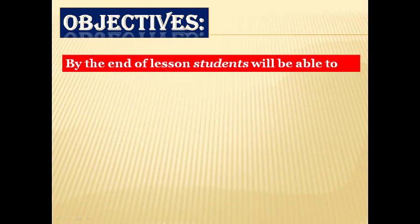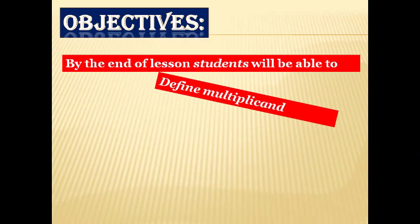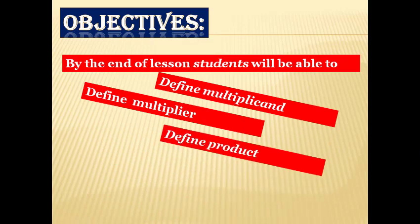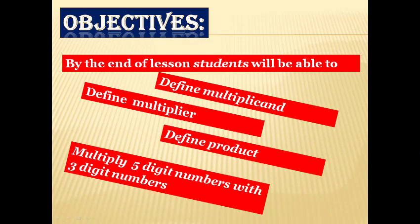Objectives: By the end of the lesson, students will be able to define multiplicand, define multiplier, define product, and multiply 5-digit numbers with 3-digit numbers.